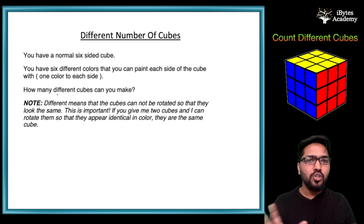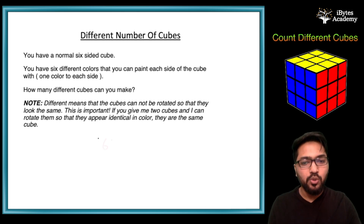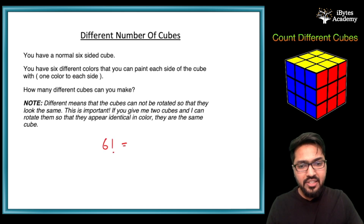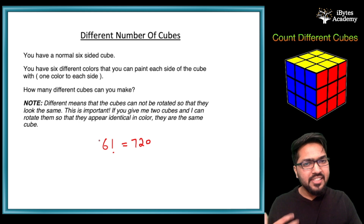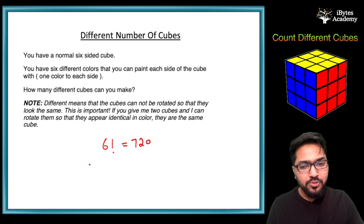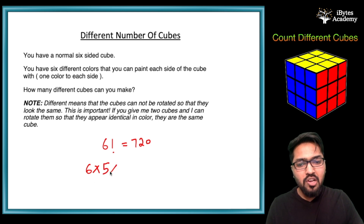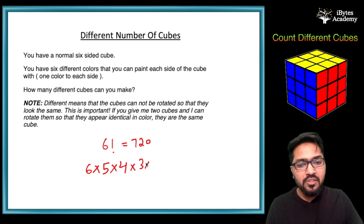Many of you would be straightaway jumping off your seats and saying the answer is six factorial, that is 720. We have six faces — for the first face we have the option of choosing any one of the six colors, for the second face we have five options, for the third face we have four options, and so on. So the answer would be six factorial.